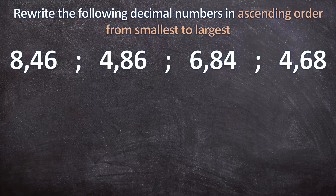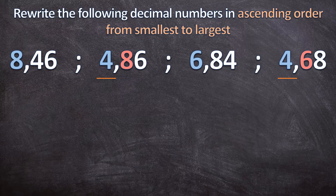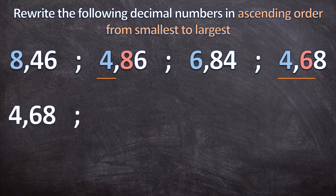We compare place values from biggest to smallest. The biggest place value here is ones. The smallest ones digit among the numbers is 4, and there are two decimal numbers with 4 in the ones place. So we first determine which of those two is smaller by looking at the tenths: 6 is smaller than 8. So 4,68 is the smallest decimal number. We write it down and cancel it. The next smallest is 4,86, so we write that down and cancel it too.